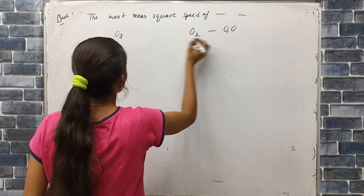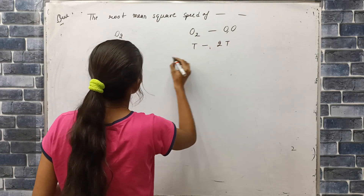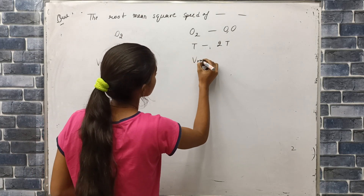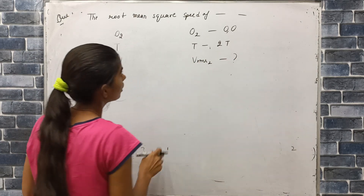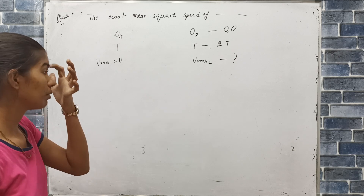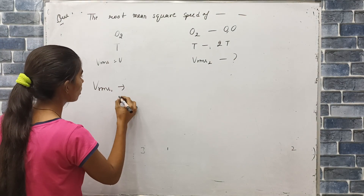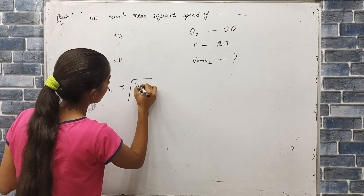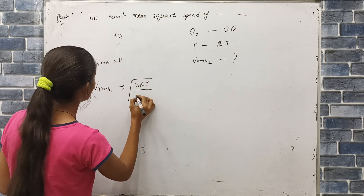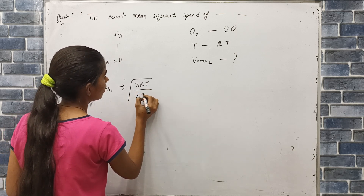If the temperature is equal to that of O₂, then the RMS speed is equal to V. Using the relationship between temperature and RMS speed, we apply the formula for atomic oxygen at double the temperature.